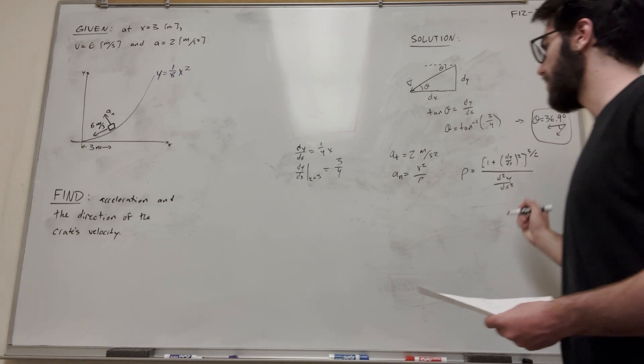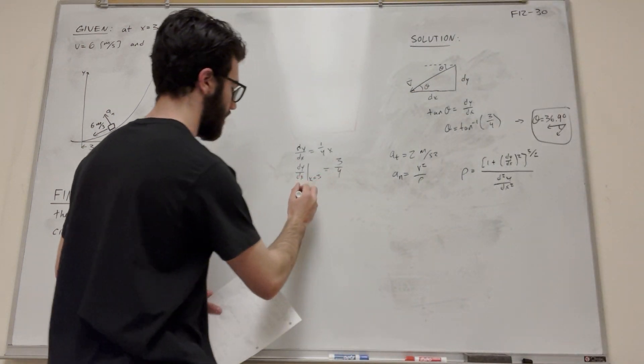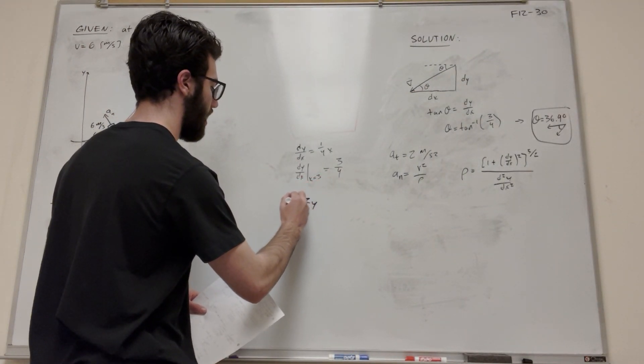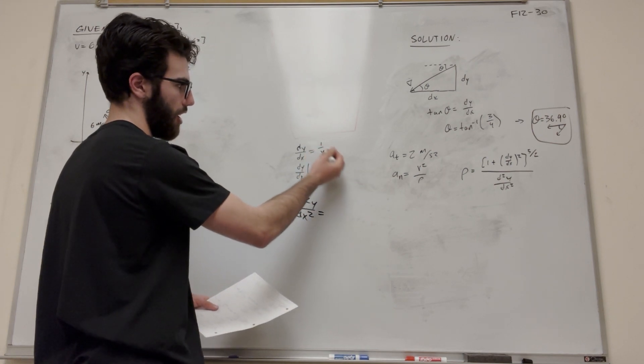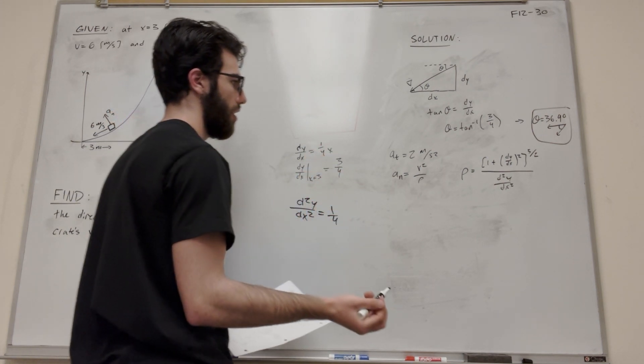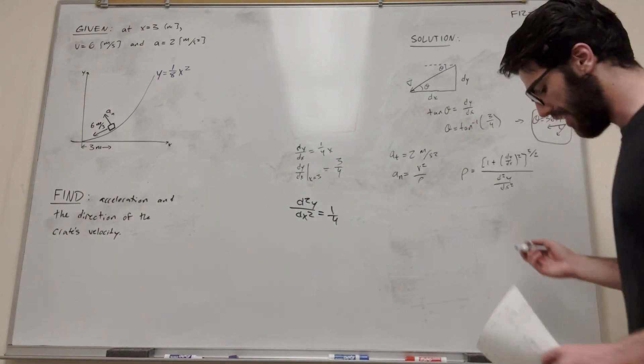Oh, this is squared. Okay, so let's take the second derivative of this. So d squared of y over dx squared, that's just equal to derivative of x, a fourth. So now we have everything we need to find the radius of curvature.